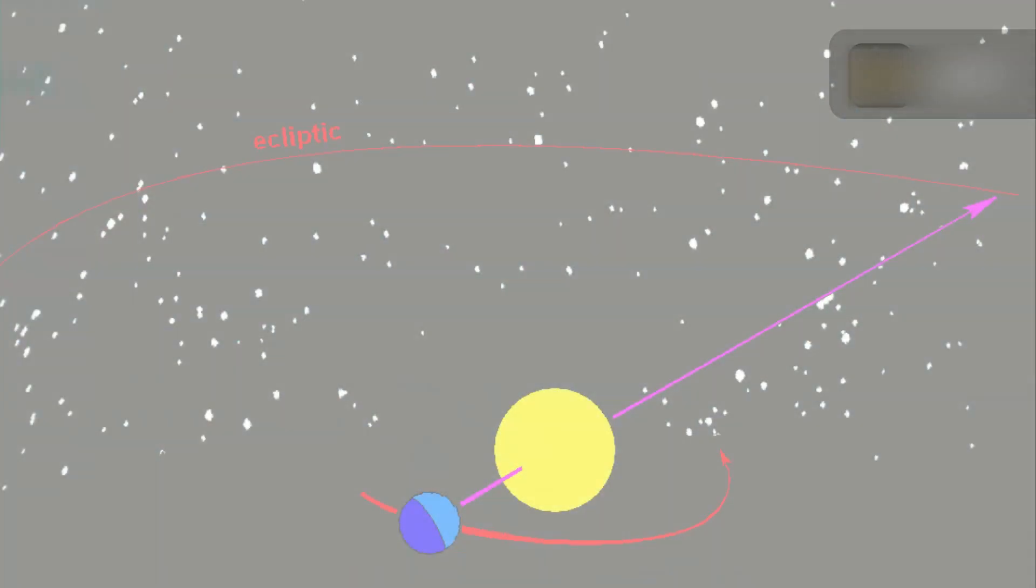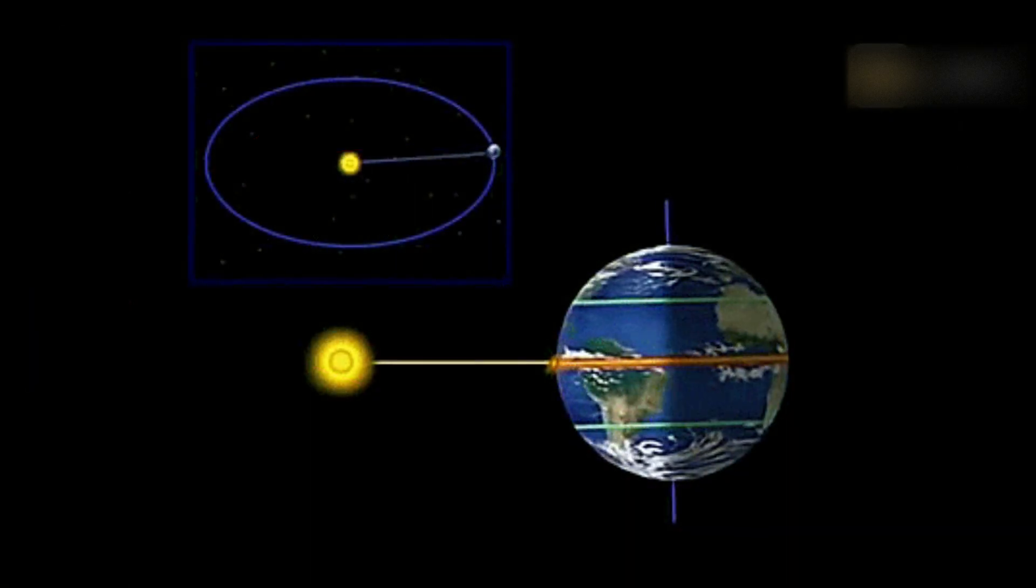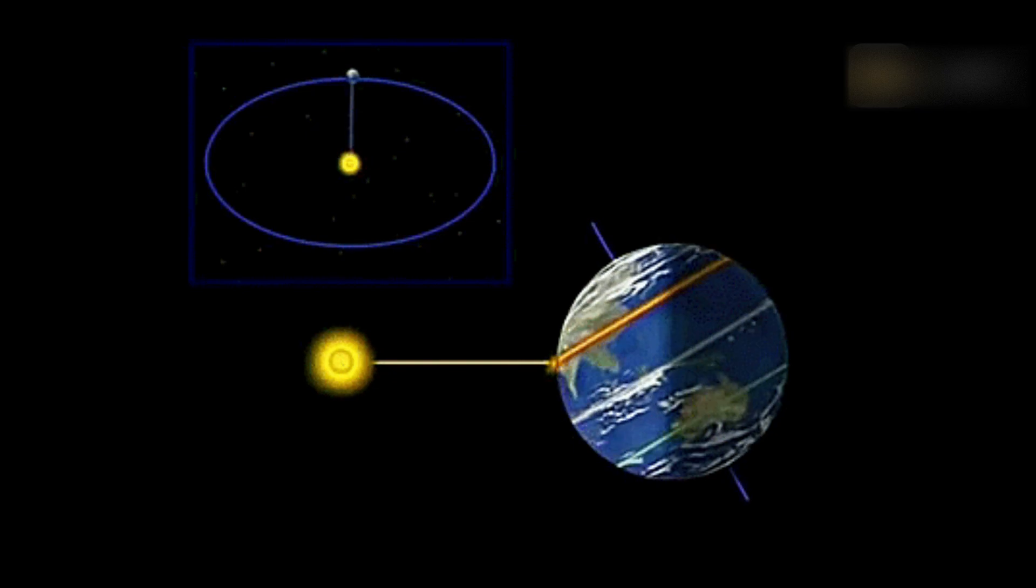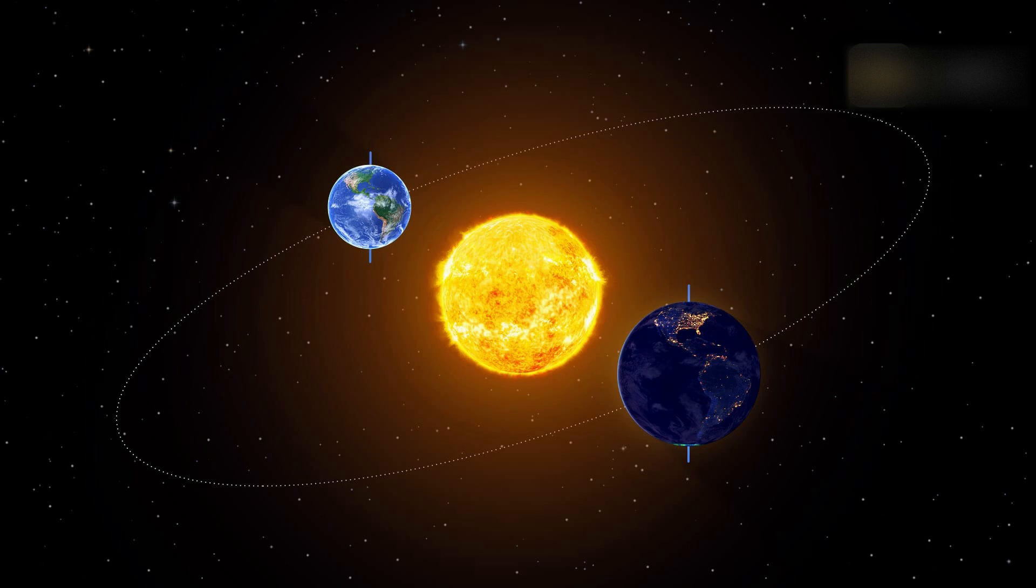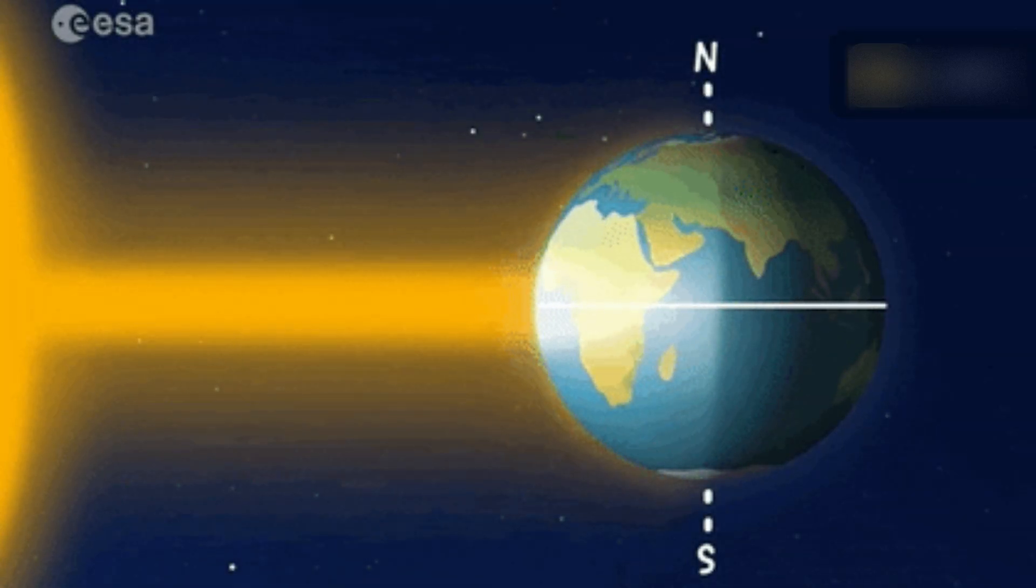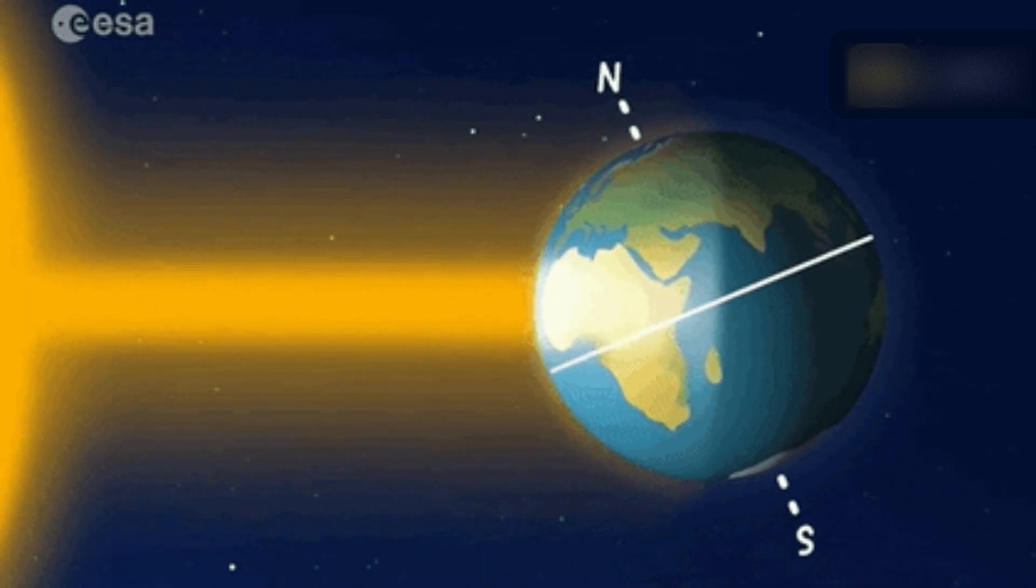On the equinox, the center of the sun is indeed above the horizon for 12 hours. However, sunrise is said to begin when the upper edge of the sun's disk becomes visible above the horizon, which happens a bit before the center rises, and ends when the entire sun has set. In this case, daylight is still a bit longer than nighttime. On this day, days and nights are approximately, but not exactly, equal in length for everyone across the globe.